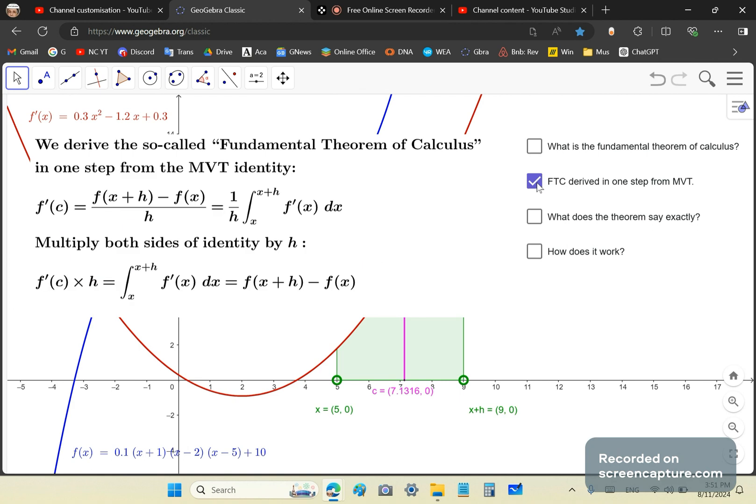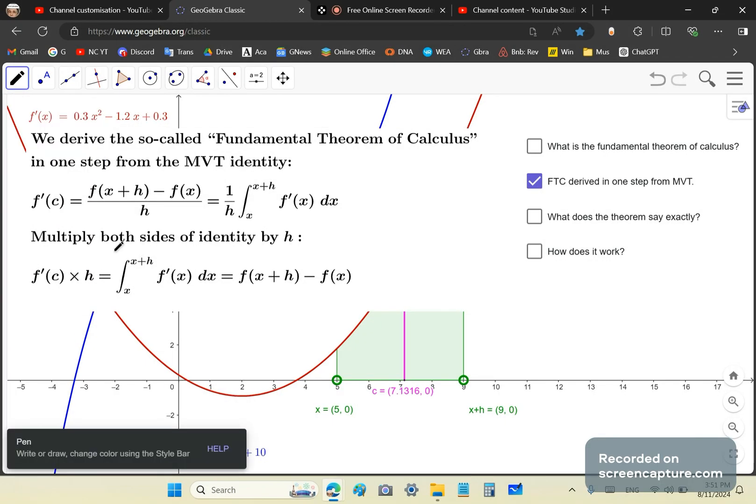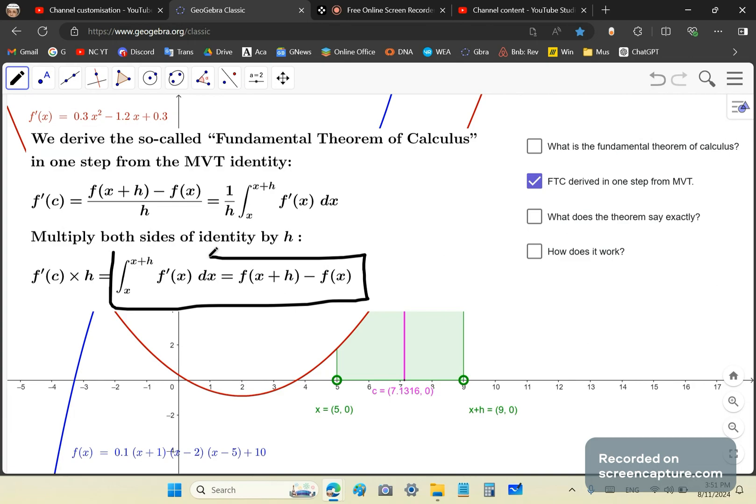So why do I call it the fundamental theorem of calculus? Because the so-called fundamental theorem of calculus is derived in one step from this identity. As you can see, it's just the integral divided by the interval with h. So if you multiply both sides of this identity by h, you have what's known as the fundamental theorem.